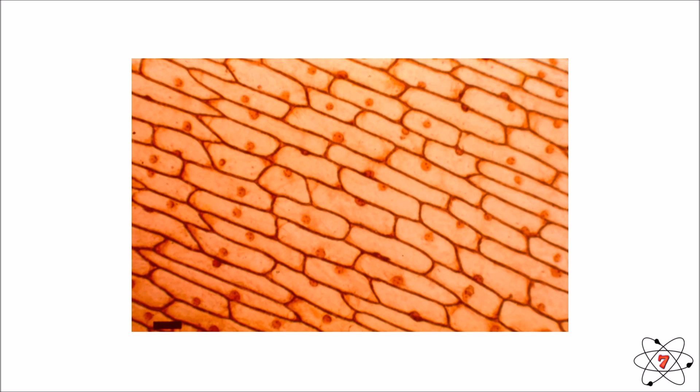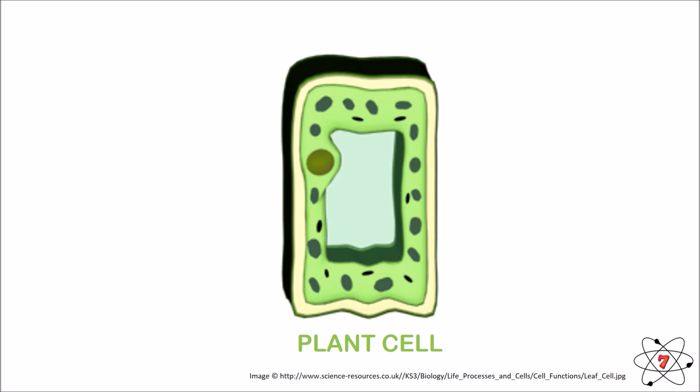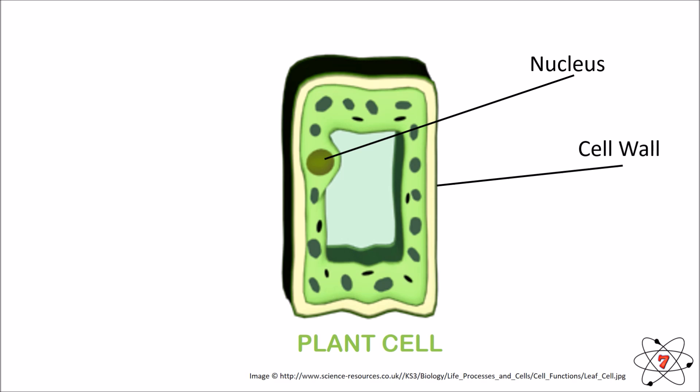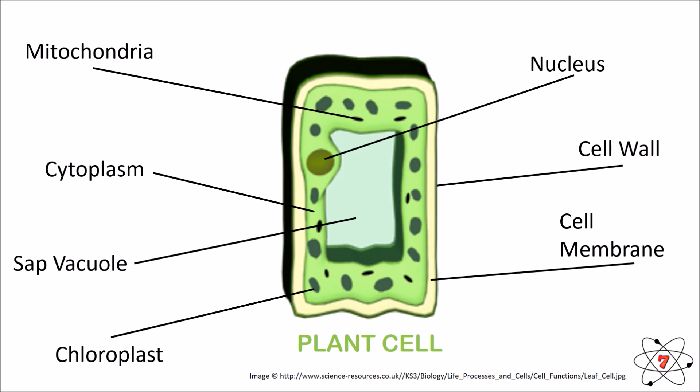Obviously, they're much, much smaller than this in real life. We've got a picture here of a plant cell and we need to know what all the different parts are. We have got the nucleus, the cell wall, the cell membrane, chloroplast, sap vacuoles, cytoplasm and mitochondria. There are some other things in there that we don't need to know about yet, but we are going to find out about them soon. But you do need to know what all of the things labelled are.